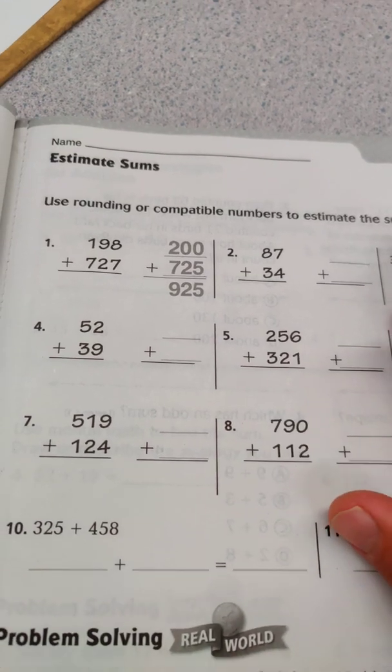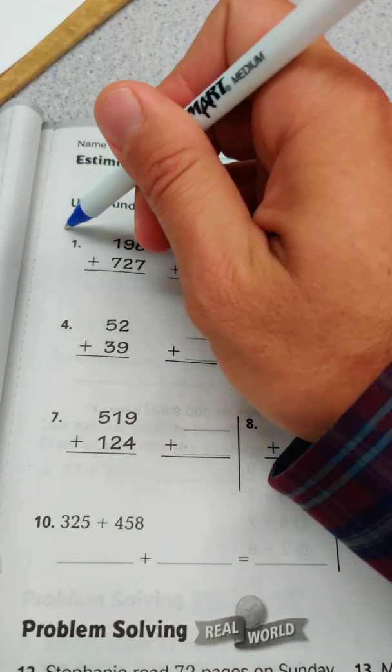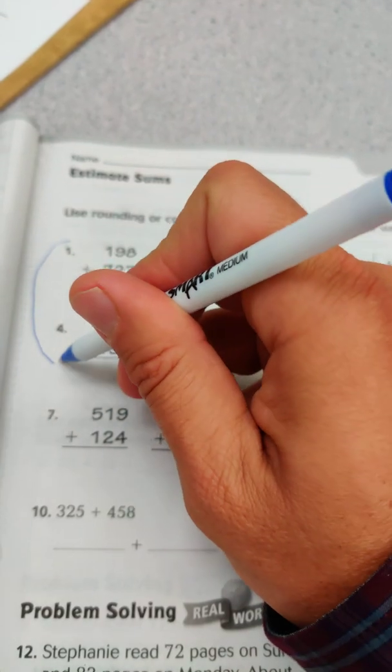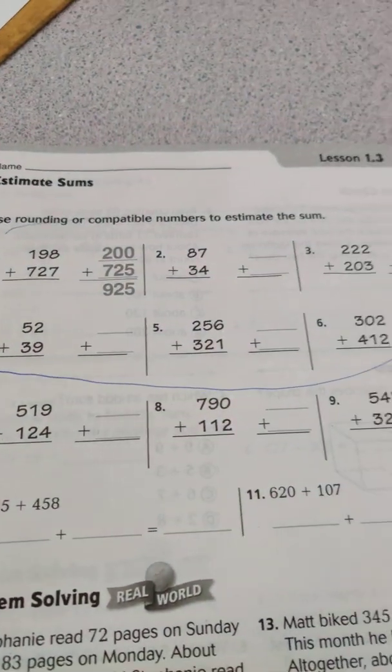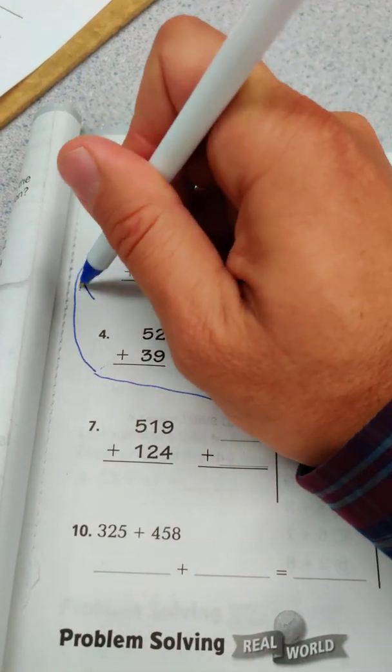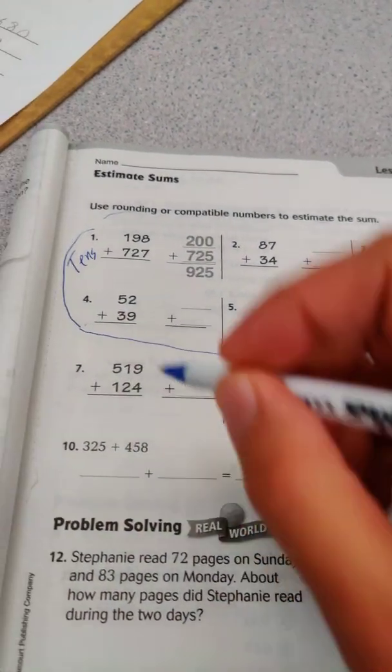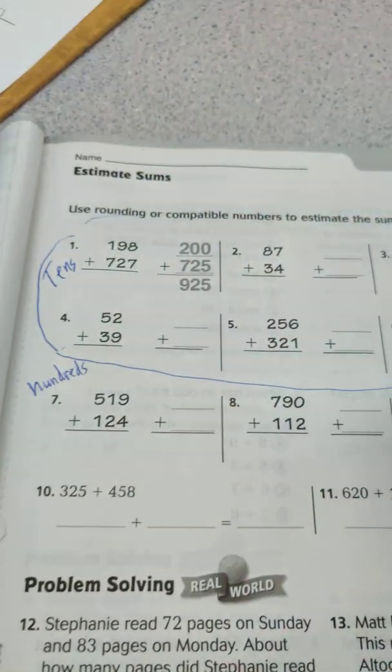Since we are rounding, for the first two groups of questions we're going to round to the nearest tens. Then for problems seven, eight, and nine, we'll round to the nearest hundreds.